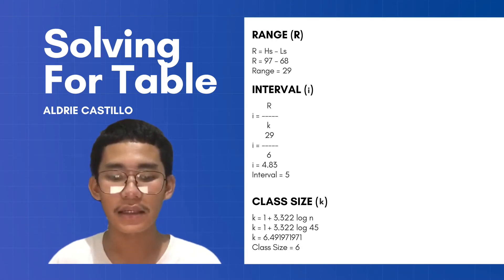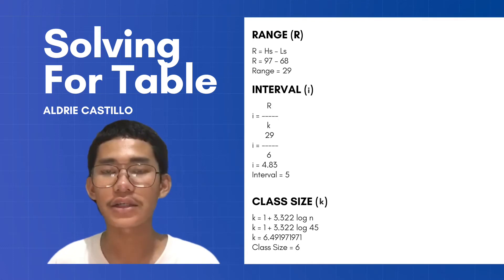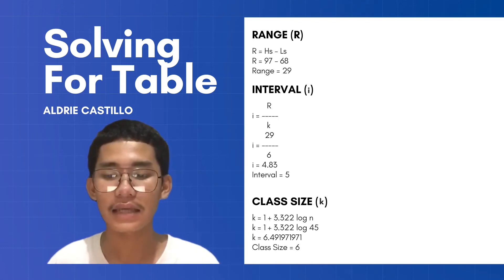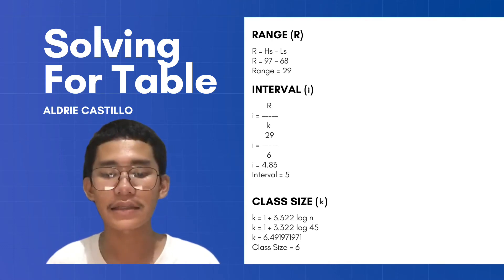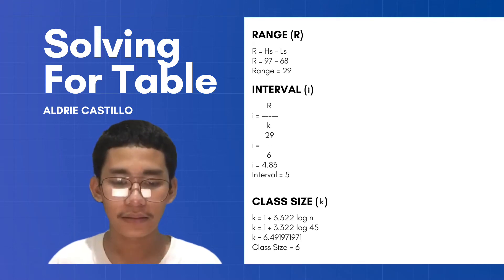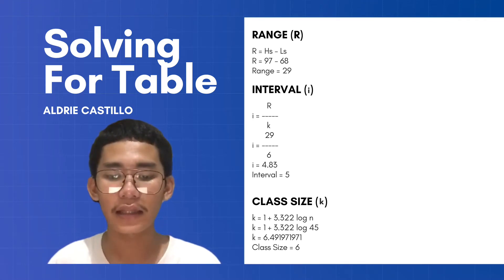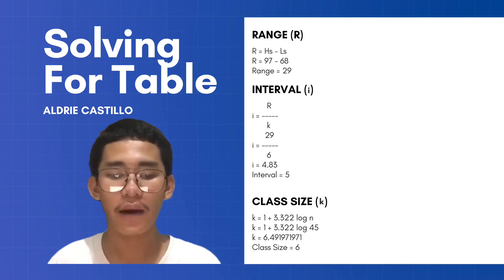The last step in solving is the interval. Interval is the quotient of range divided by class size — range acts as the dividend while class size is the divisor. In our data, the range was 29 and the class size was 6. 29 divided by 6 is 4.83, and we need to round off this number, so the interval is 5.